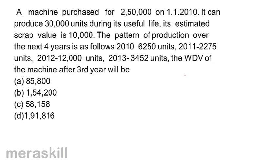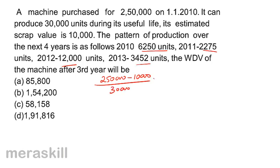A machine purchased for 2,50,000 on 1-1-2010 can produce 30,000 units during its useful life. Estimated scrap value is 10,000. The depreciation per unit is: (2,50,000 − 10,000) ÷ 30,000 units = 2,40,000 ÷ 30,000 = 8 per unit.